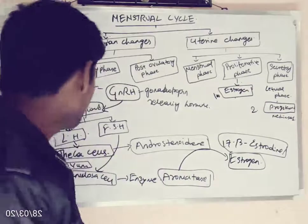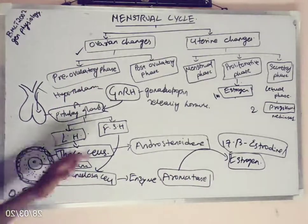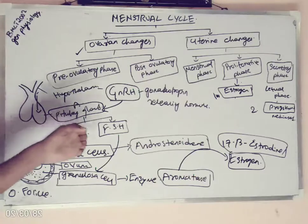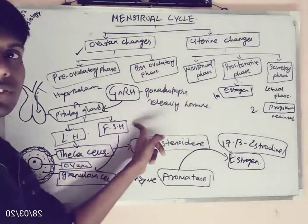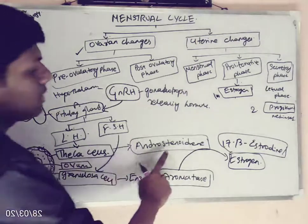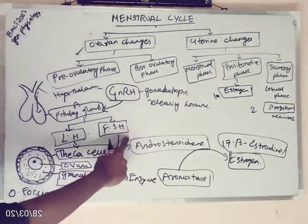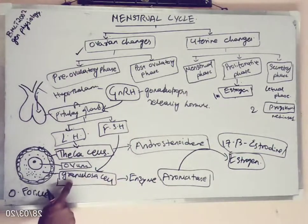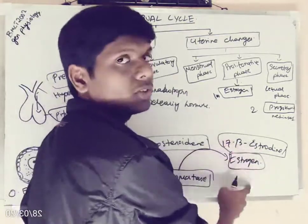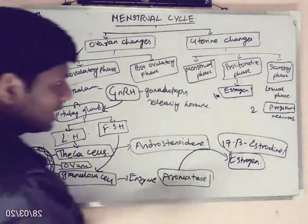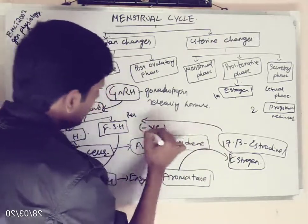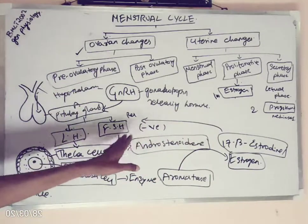This is how estrogen is produced by the ovarian follicles. The hypothalamus secretes gonadotropin-releasing hormone, which goes to the anterior pituitary gland. The anterior pituitary gland secretes LH and FSH. LH acts on the theca cells to produce androstenedione, while FSH stimulates granulosa cells to secrete aromatase, which cleaves androstenedione into 17-beta-estradiol. This estrogen then exerts a negative feedback, inhibiting the release of FSH so that FSH production is reduced.